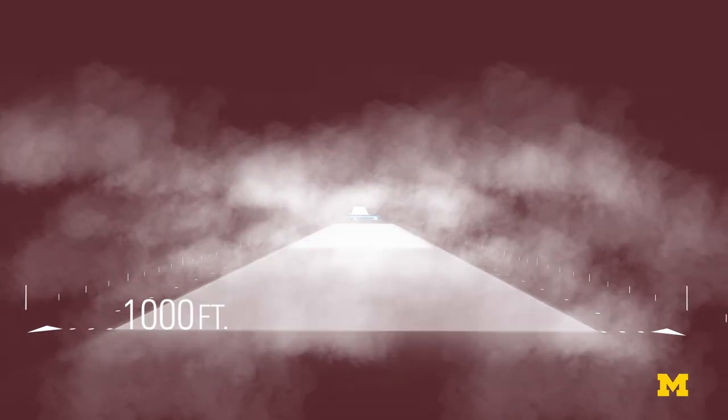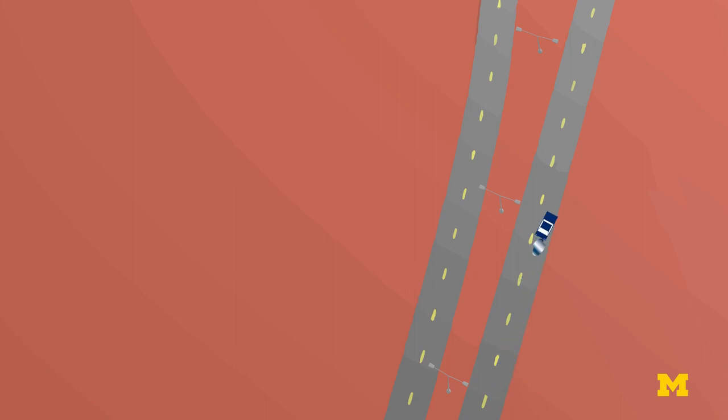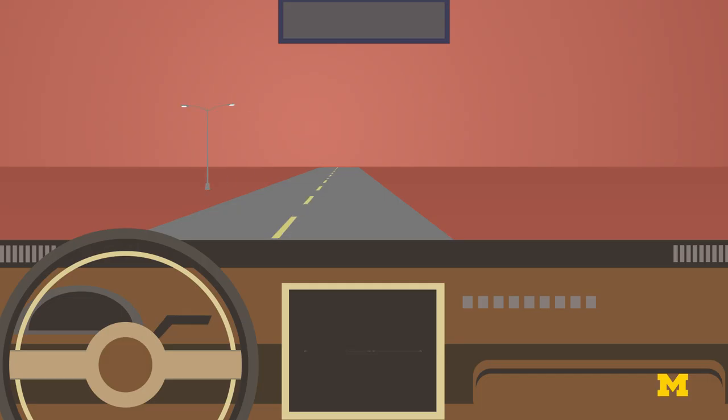This data can even pass through inclement weather. When a car hits a patch of black ice and skids off the road, connectivity between vehicles and infrastructure alerts other vehicles to avoid the situation by slowing down.